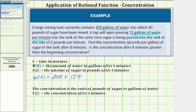Now let's write the function s(t), which is the amount of sugar in pounds after t minutes. We begin with 40 pounds of sugar, and then once the tap opens, sugar is added at a rate of two pounds per minute. Which means s(t), the amount of sugar in pounds after t minutes, is equal to 40 plus 2t.